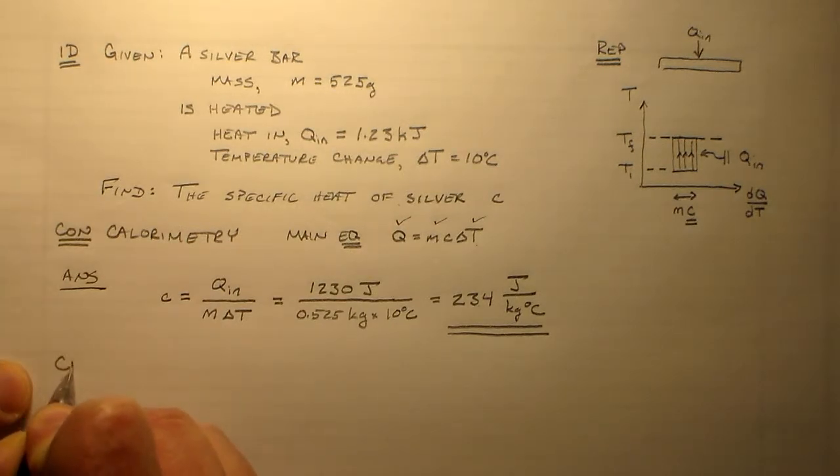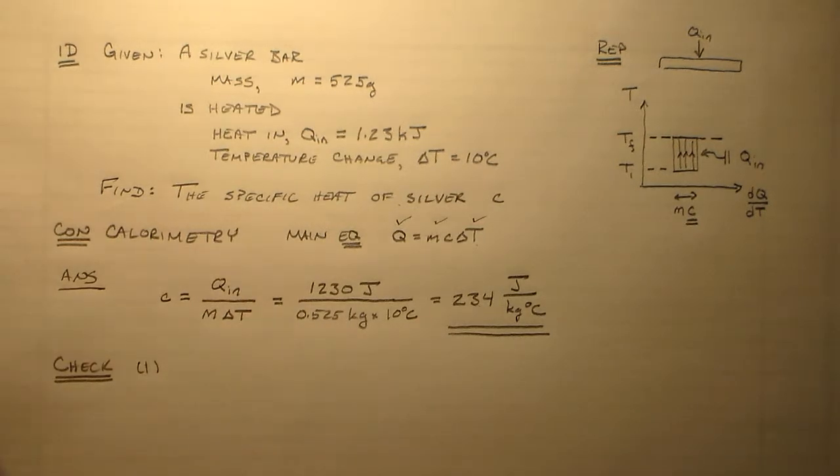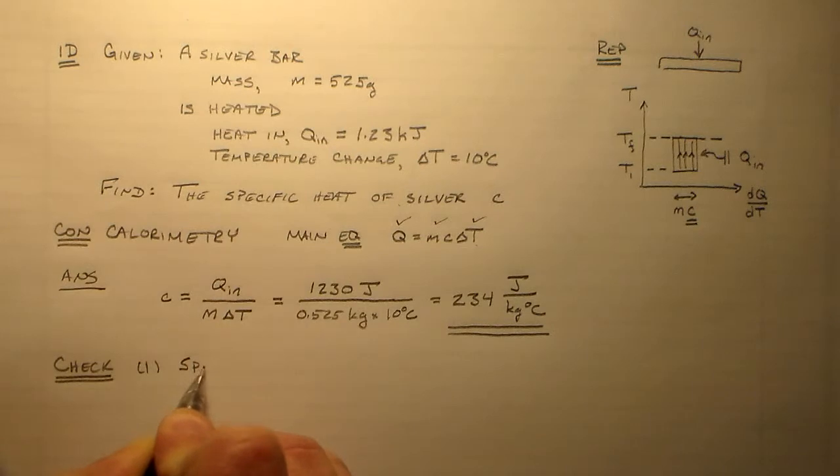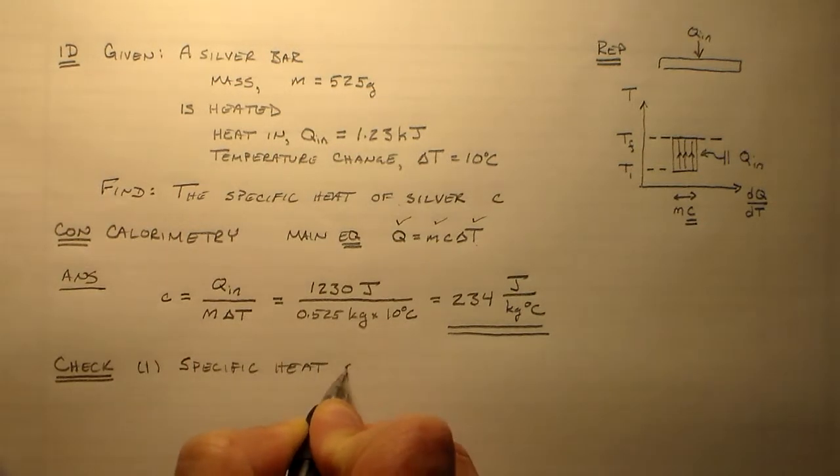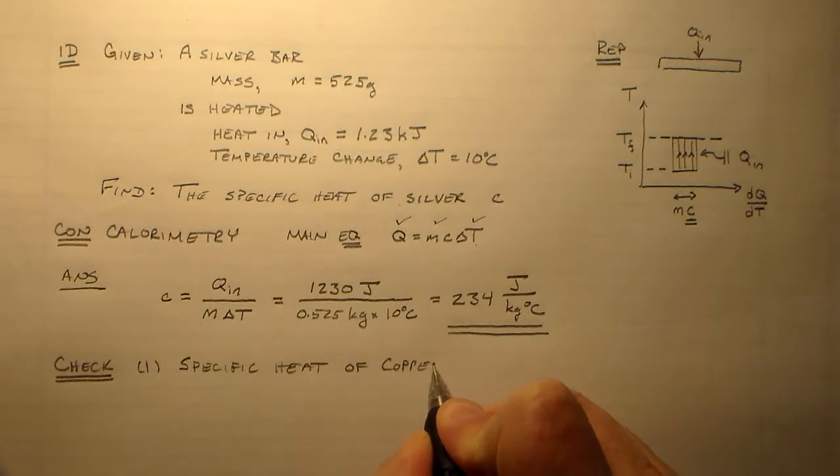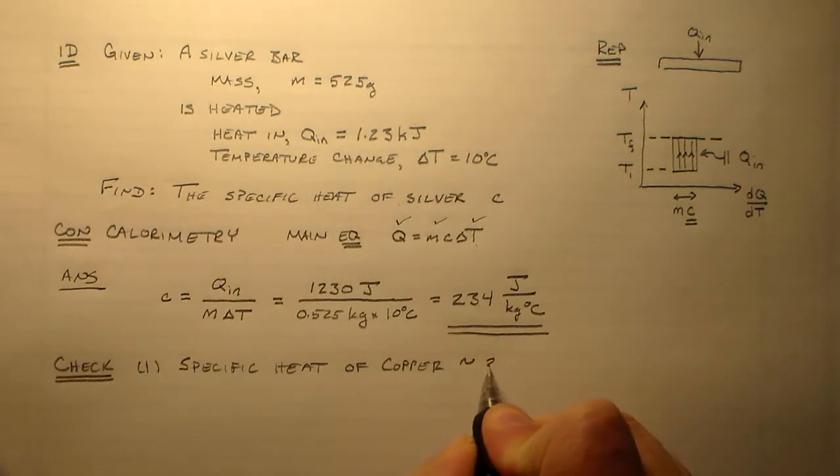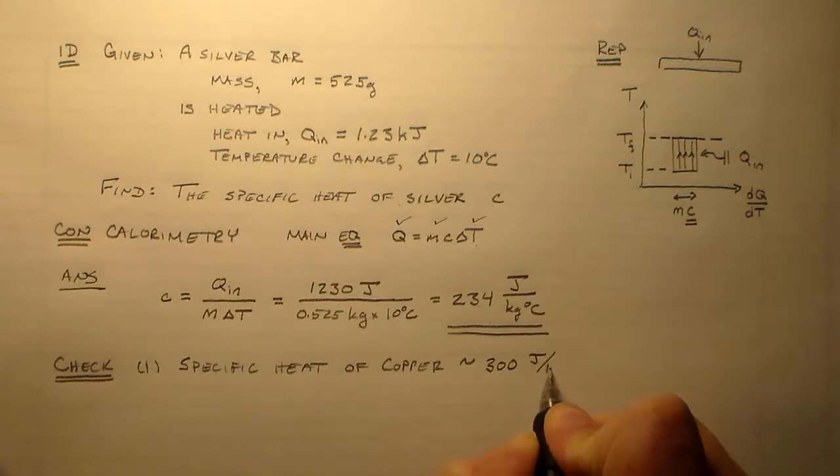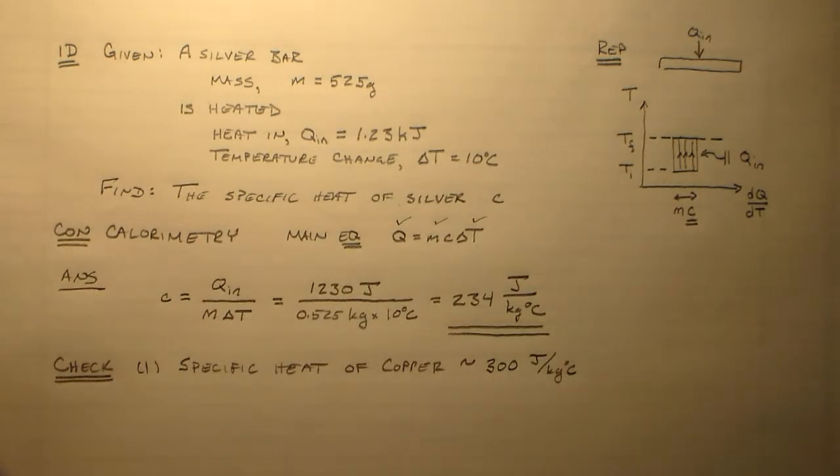So let's see. How can we check that? Check one. I happen to know that the specific heat of copper is approximately 300 joules per kilogram per degree C. So that's near. So this is reasonable.